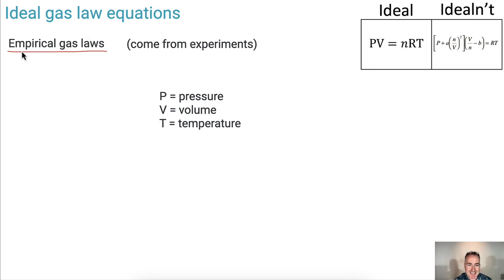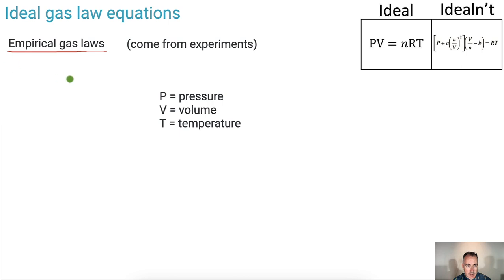These gas laws actually came from empirical experiments, which means if you actually ran an experiment — before they actually knew the exact numbers — scientists still knew that this ratio, P times V over T, was some kind of constant. This is actually done experimentally; you can actually figure this out.